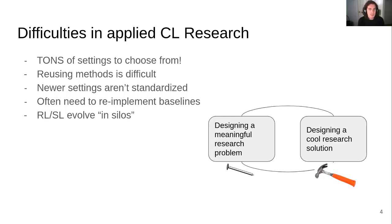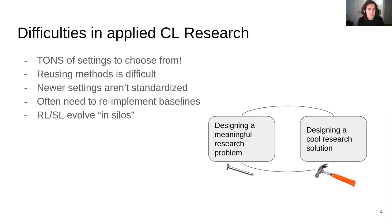Newer settings, when they get introduced, aren't very well standardized, and it's difficult to replicate results of other papers. You often need to re-implement baselines in order to be able to compare against them. And reinforcement learning and supervised continual learning somewhat evolve in silos, separate from each other.